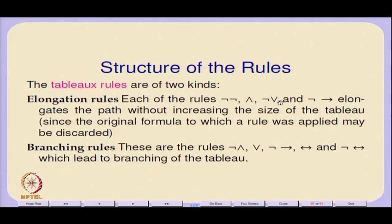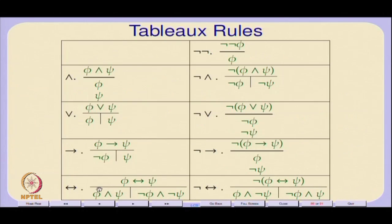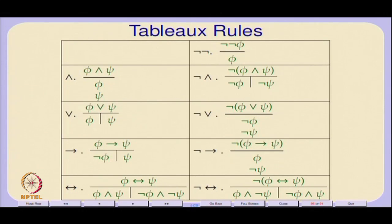Double negation can also be regarded as an elongation rule because it does not branch. The biconditional rule actually expands the size of formulas to be considered, but all other rules do not expand the size. If you think of the top as the numerator and the bottom as the denominator, the sizes of denominators are non-increasing except in the case of the biconditional — which is a good reason why Smullyan did not consider it, because it destroyed the beauty of the tableau.